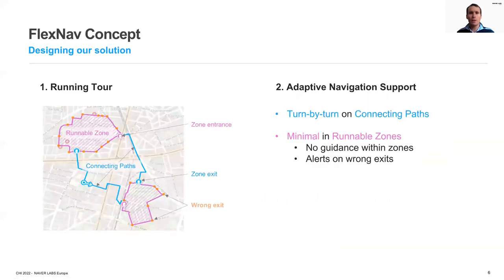Aligned with the survey findings, we designed our FlexNav concept. FlexNav proposes running routes linking together the best runnable zones in a neighborhood, as analyzed from map features such as greenery, low-level traffic, and type of road. It provides adaptive guidance enabling the runner to follow these routes both precisely in the connecting paths with turn-by-turn navigation and more freely within the runnable zones.